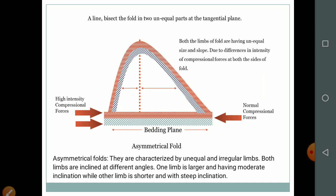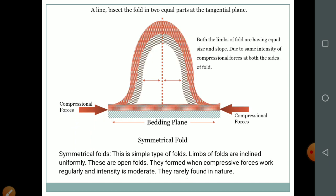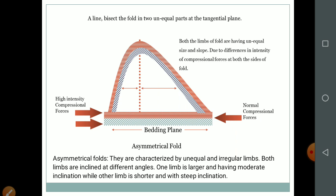Asymmetrical fold — the name itself says they are characterized by unequal and irregular limbs. Both limbs are inclined at different angles. One limb is larger with moderate inclination while the other limb is shorter with steep inclination. One side experiences high compressional forces and the other experiences moderate compressional forces — that is why it forms an asymmetrical fold.